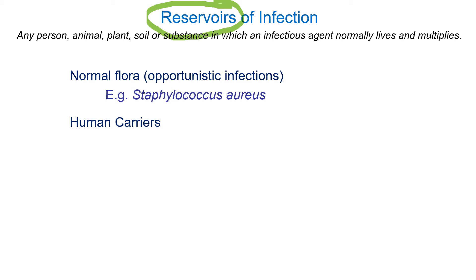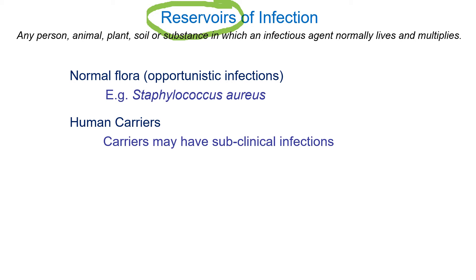Humans are another source of infection. A good example is sexually transmitted diseases, which transmit only from human to human. Some carriers may be asymptomatic or have subclinical infections — for gonorrhea or chlamydia, maybe up to 50 percent of people have no symptoms, making it easy to spread. With COVID-19, there seem to be many asymptomatic carriers spreading the disease, which is why it is spreading so rapidly worldwide.